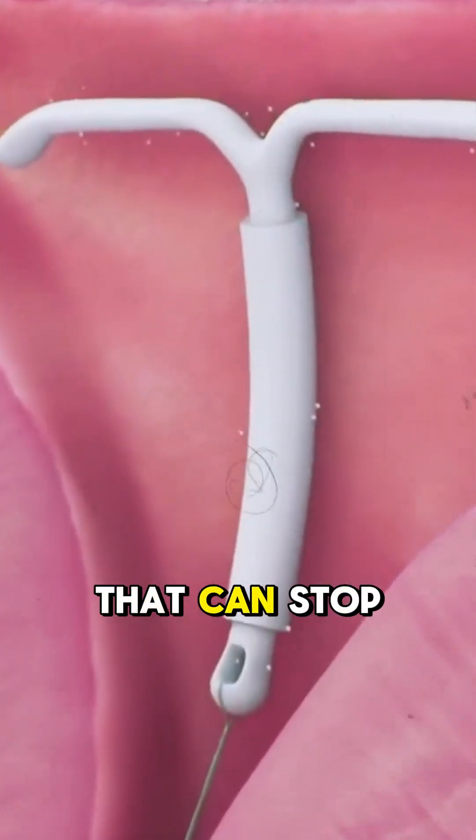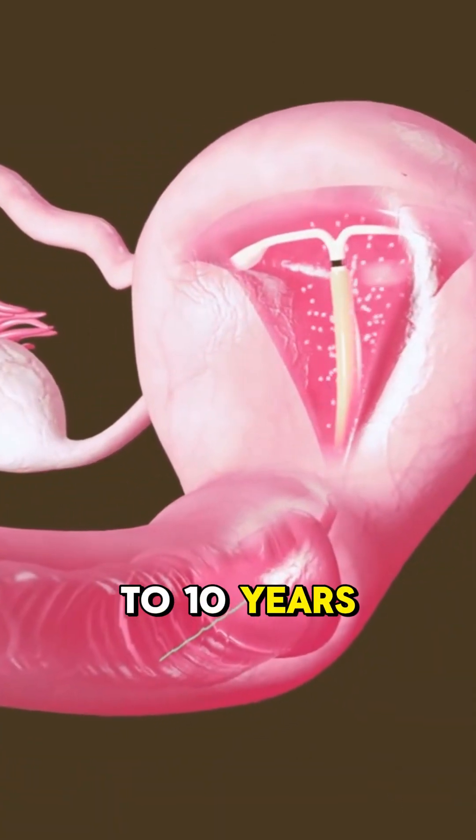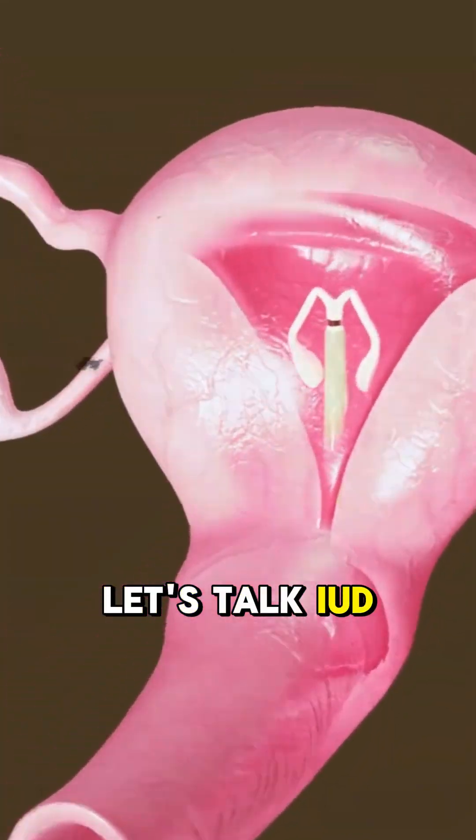A tiny T-shaped device that can stop pregnancy for up to 10 years? And it fits inside your uterus. Let's talk IUDs.